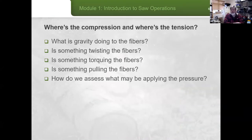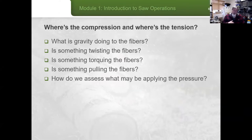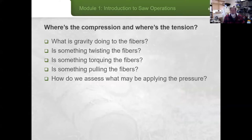The big questions to ask are: where's the compression and where's the tension? The first is always — what is gravity doing to the fibers on this tree that we need to remove from the trail corridor? Where is the pressure that gravity is applying? What is that doing to compress the fibers, and what is it doing to add tension to the fibers?